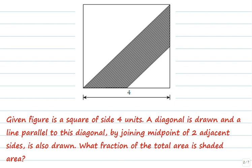A diagonal is drawn and a line parallel to this diagonal by joining midpoint of two adjacent sides is also drawn. What fraction of the total area is shaded area?